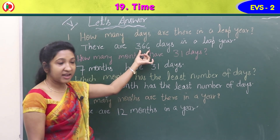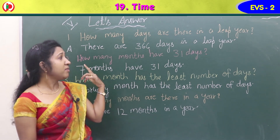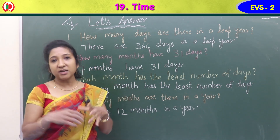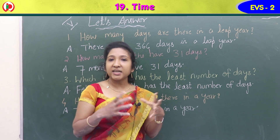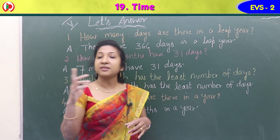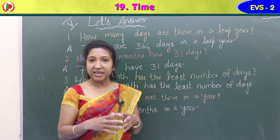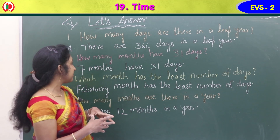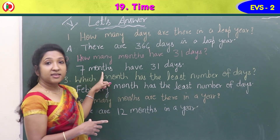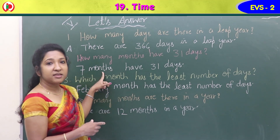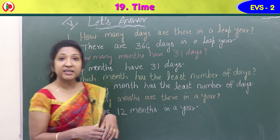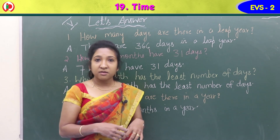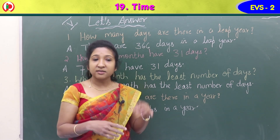Second question: how many months have 31 days? Some months have 30 days and some have 31 days. The answer is seven months have 31 days.